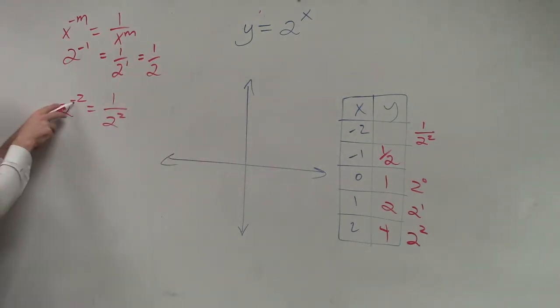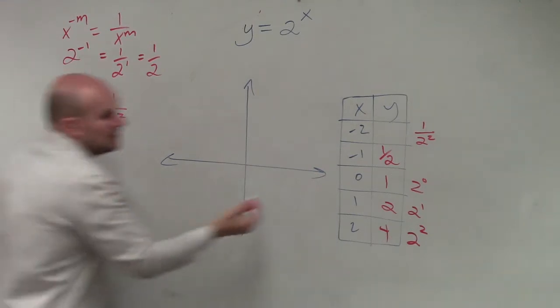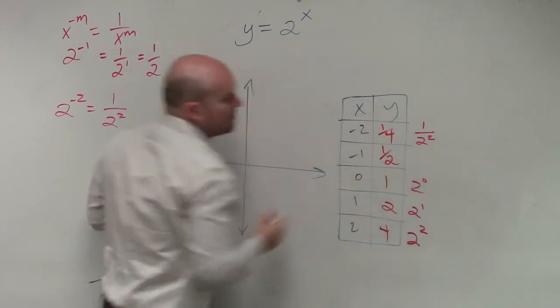So here, to make the 2 positive, I put it in the denominator. So here, now what is 2 squared? 4. So it's 1 fourth.